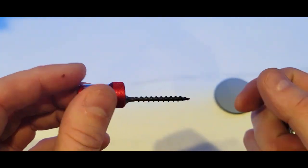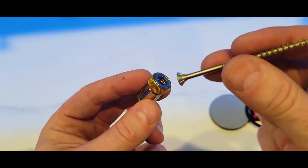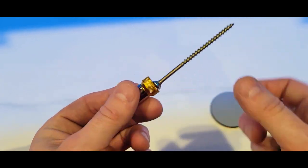So this is a drywall screw and you can see it still holds. This is a construction screw, the yellow longer one.